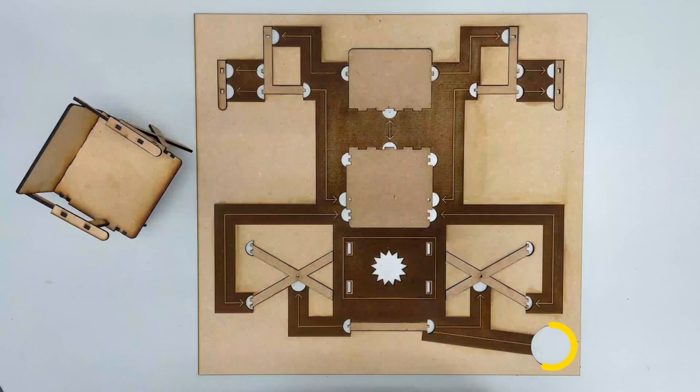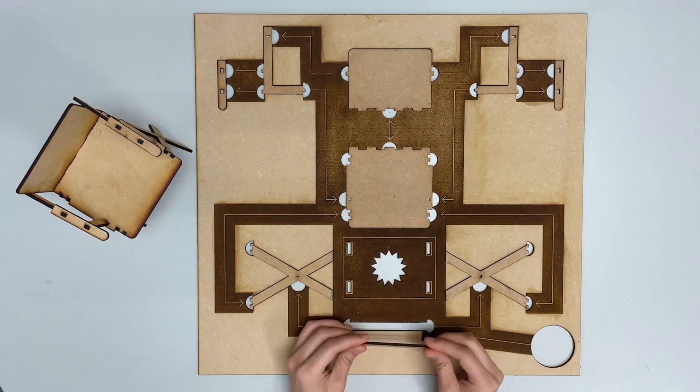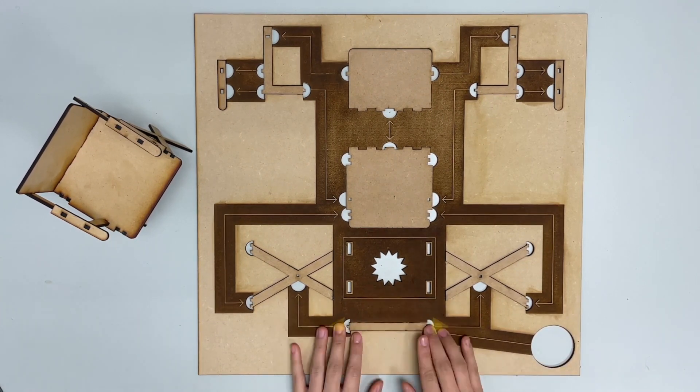The blind or low vision user can find the entry component through a hollowed circle on the bottom right of the plate. Next, the user can follow the tactile arrows to find the subsequent components and assemble them.